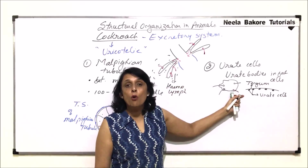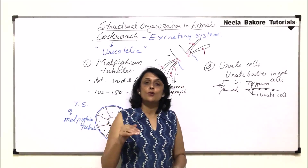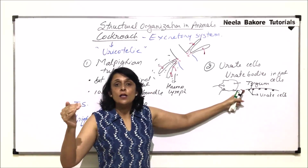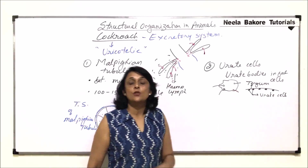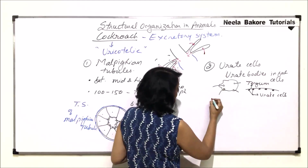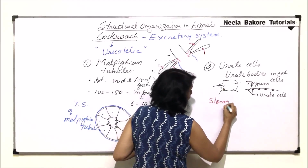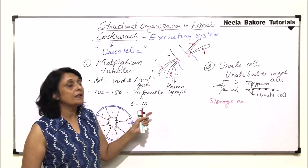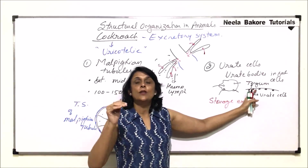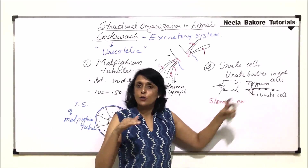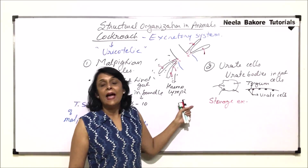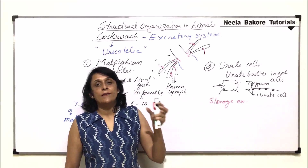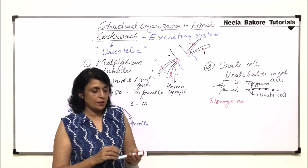When cockroaches undergo molting, that is the time when the exoskeleton is lost and a new exoskeleton is secreted. So if the tergal plate is lost, along with it the urate cells will also be lost. That means their mode of excretion is storage excretion — they keep storing waste until they are full. Once full with uric acid, they attach on the inner side of the exoskeleton, which could be tergum, sternum, or pleura. When molting takes place, these plates are lost and the uric acid-containing urate cells are lost along with them.